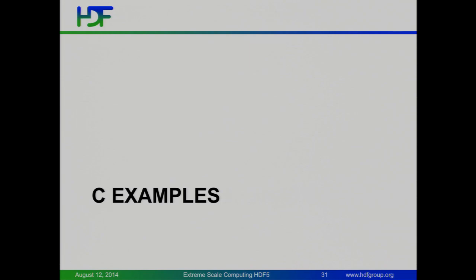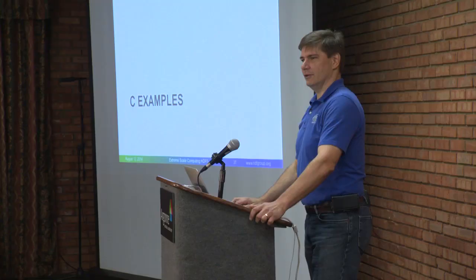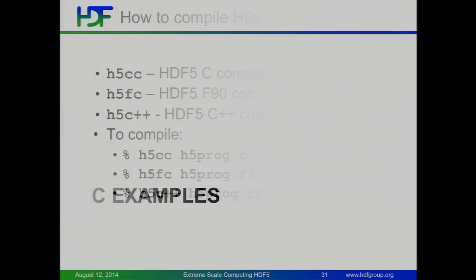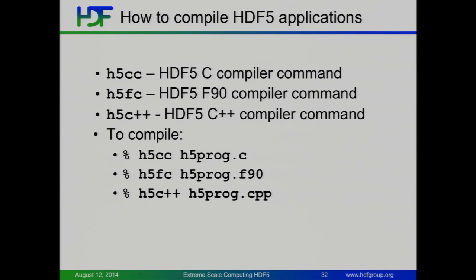Let's talk through a couple of C examples. We ship with these compiler wrappers — any of the programs I'm showing you, you can just run h5cc and it will create a little executable for you. It does the right thing. All these examples, until we get to the second half, are all sequential programs — we're not talking parallel yet. This is just to get you up to speed on HDF5, understand what's going on, and move from there.